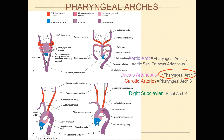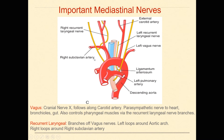What happens is when this breaks off on the right side, instead of getting hooked under the front of the arch, it now gets hooked under the subclavian. So on the right side, the recurrent laryngeal actually loops around your subclavian. But on the left side, because that part didn't disappear, it hooks under the arch of the aorta — that is your left recurrent branch.